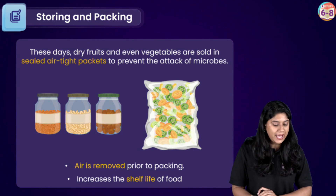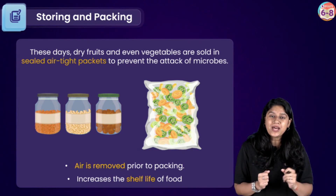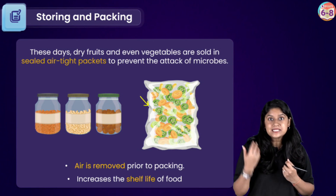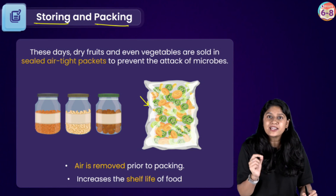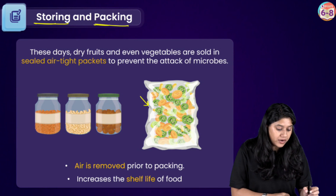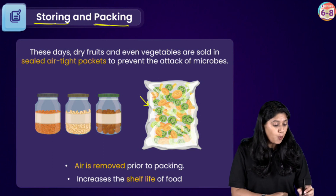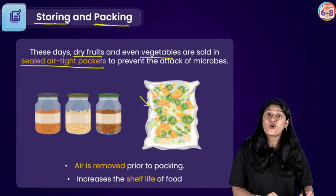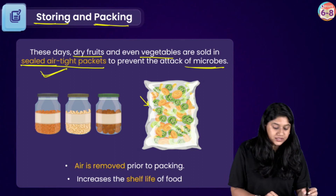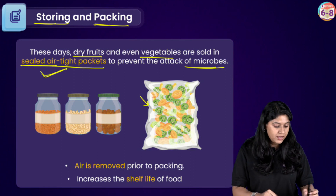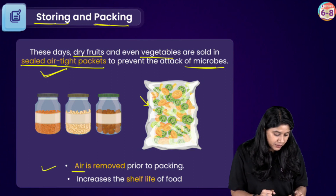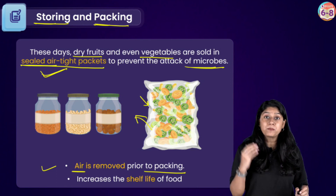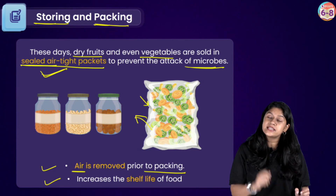Starting with storing and packaging. I'm sure if you go to a supermarket you would have seen sealed packed jars and packets — it could be a packet of chips or a packet of some dals. Dry fruits and even vegetables are sold in sealed airtight packets to prevent the attack of microorganisms. The air is reduced and removed from these packets to prevent microbial attack.